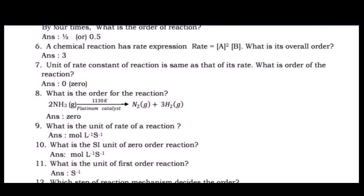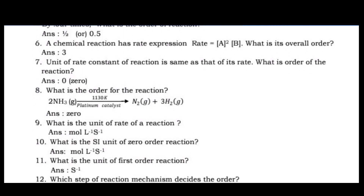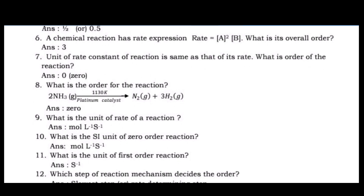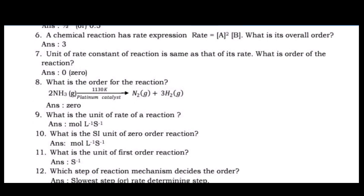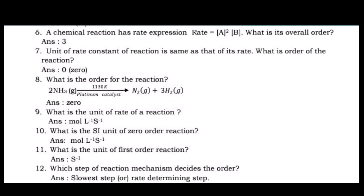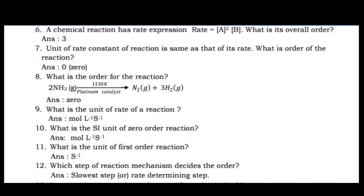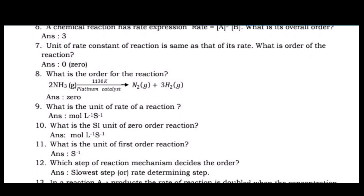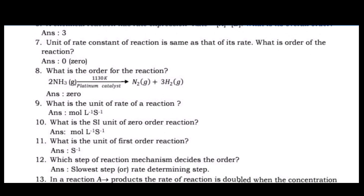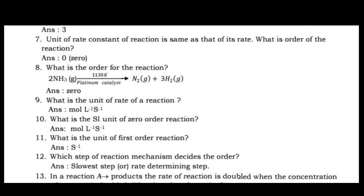Question 8: What is the order for the reaction 2NH₃(g) → N₂(g) + 3H₂(g) on platinum catalyst at 1130 K? Answer: Zero order.